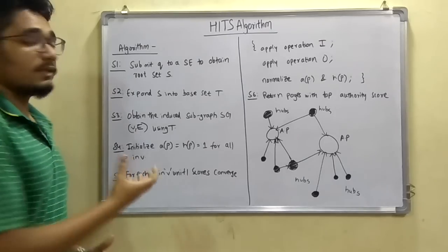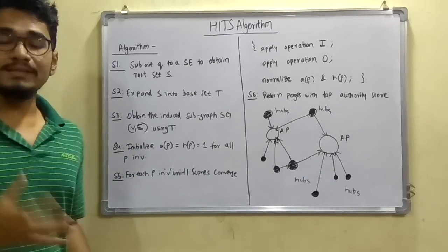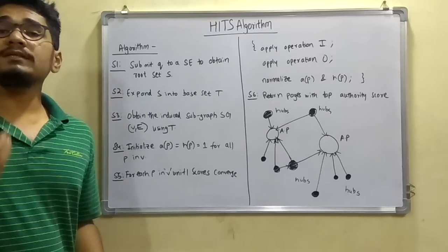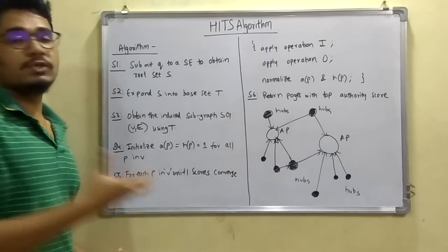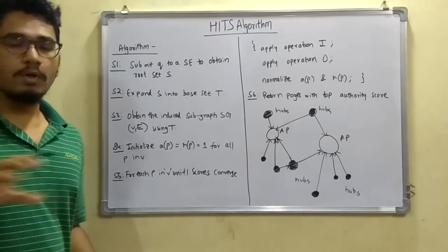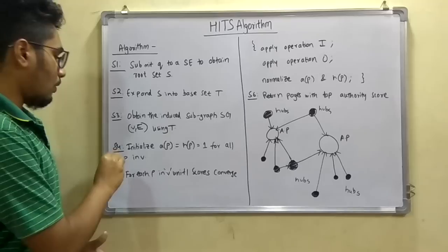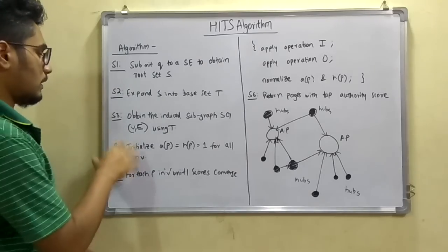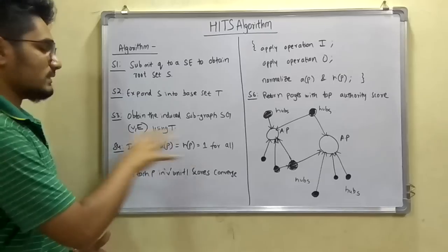Next, step 4 is to initialize, that is A(P) equals H(P) equals 1. A(P) is the authority score and H(P) is the hub score and we update it to 1. And for all P in V, for all the queries in this vertex V, we set this value.